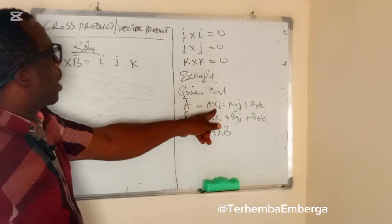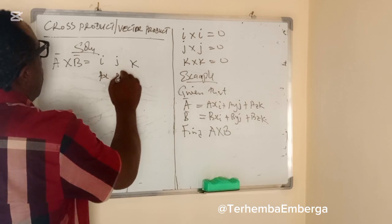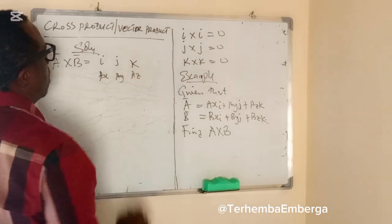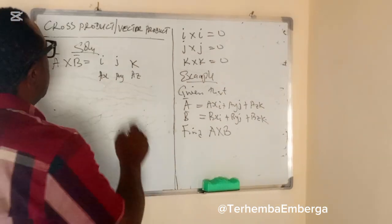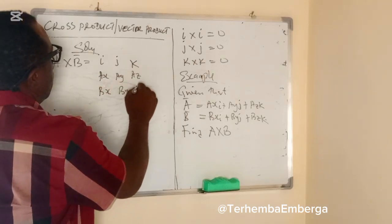and then we'll write down the components AX AY AZ, also write the components of B: BX BY BZ.